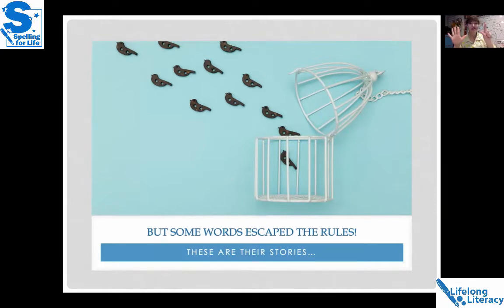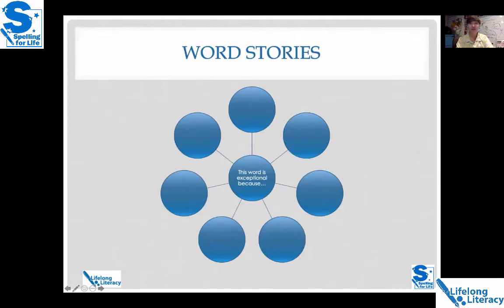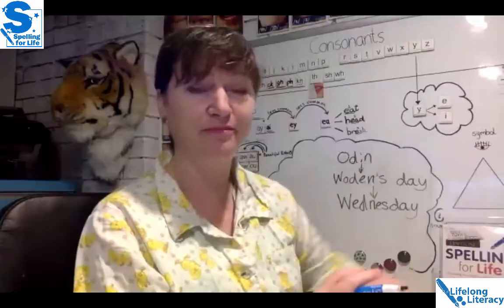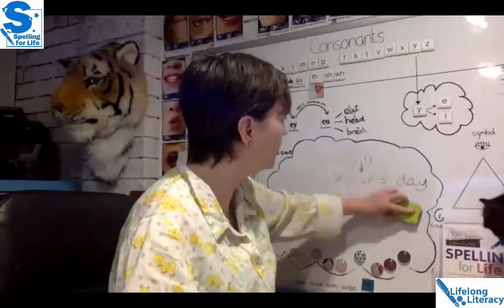It took a very long time to standardize English spelling, but now we have a standard spelling and it follows certain rules. However, some words escaped those rules — and this is the story of those words. There are seven main reasons why words don't follow the rules; today we're going to look at four, and tomorrow the other three. I've come up with something called the Word Stories Wheel. In the middle is the statement: 'This word is exceptional because...' — and whatever word we put in the wheel, we're going to tell its story.